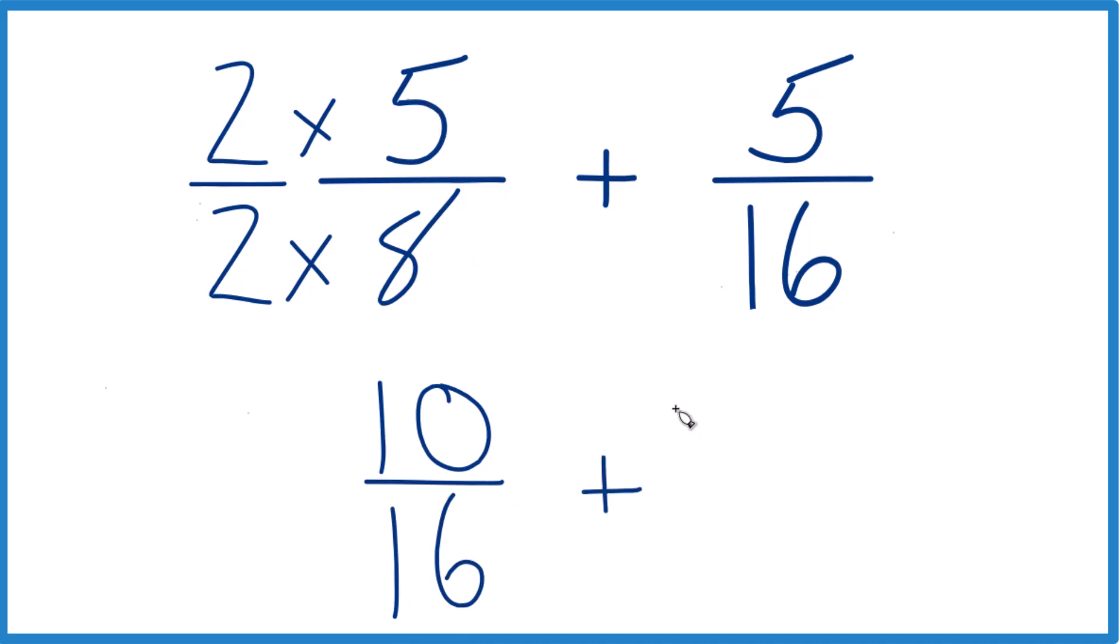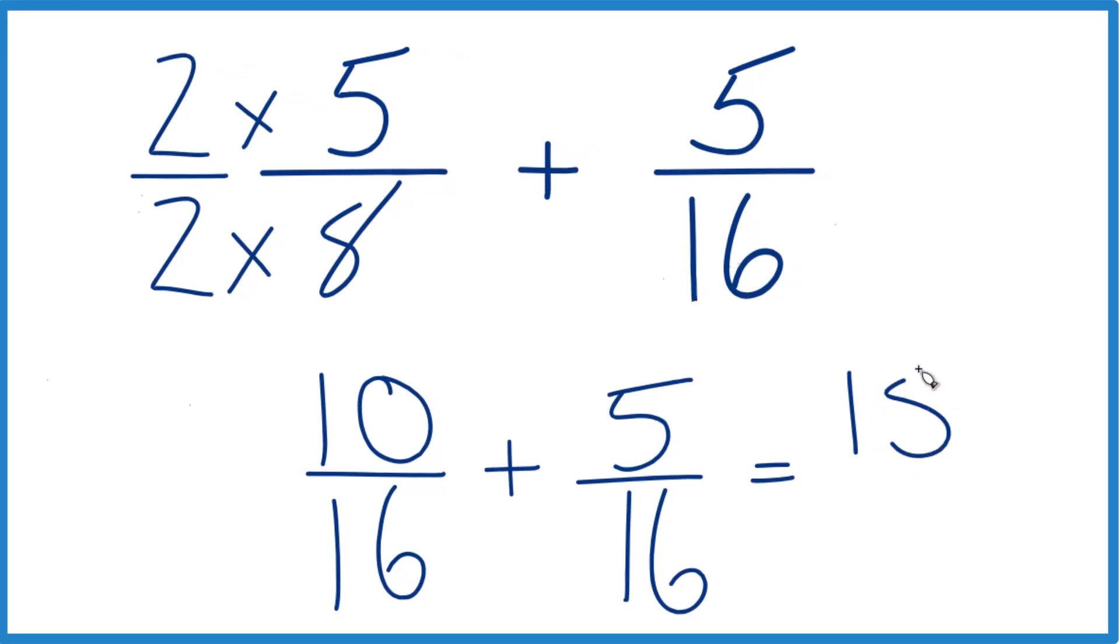Now we add our 5 sixteenths here, and because we have the same denominator, we're going to add those numerators. 10 plus 5 is 15, and then we bring the denominator across 16.